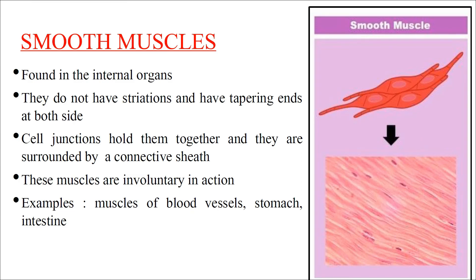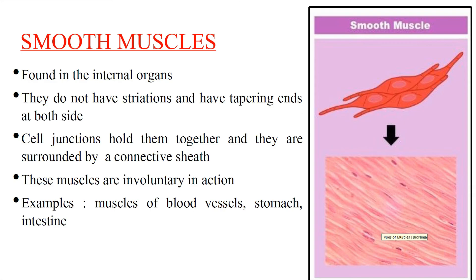Smooth muscles are found in internal organs. They do not have striations and have tapering ends with the nucleus in the middle. Cell junctions hold them together and they are surrounded by a connective sheath. These muscles are involuntary — their contraction and relaxation are not under our control. Examples include muscles of blood vessels, stomach, and intestine.